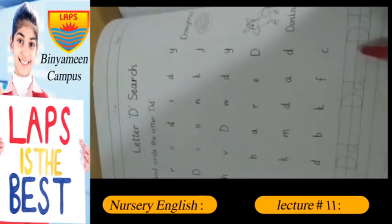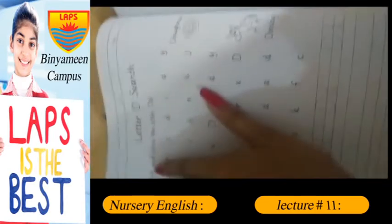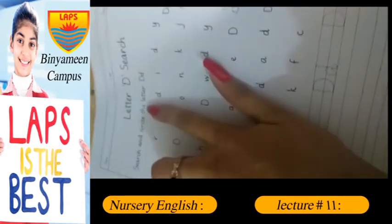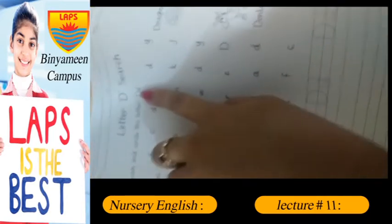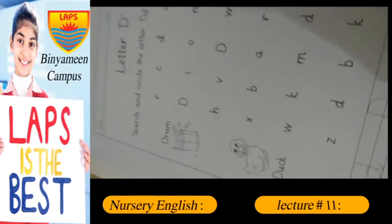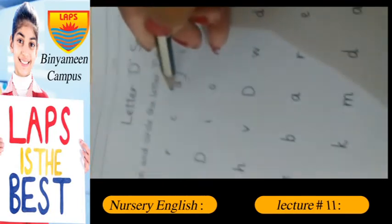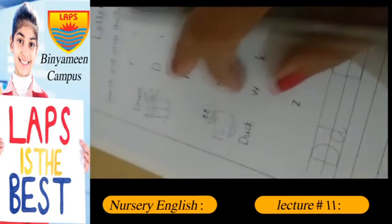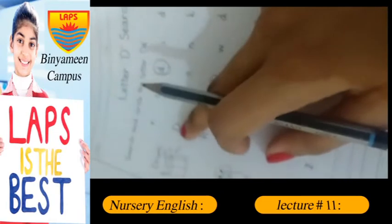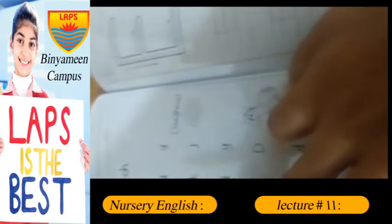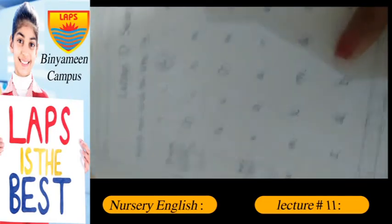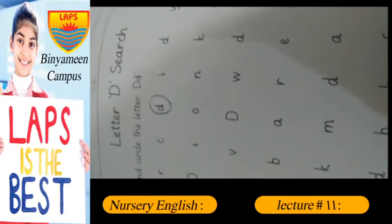Now, next page. We have to read that letter D search. Search and circle letter D — small and capital. You have to circle the letter D wherever you can see it.